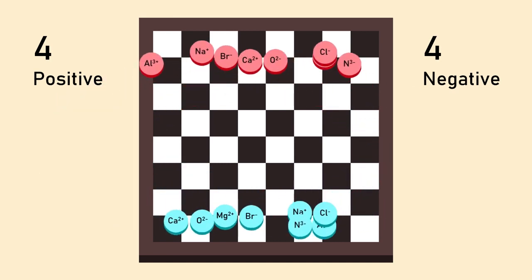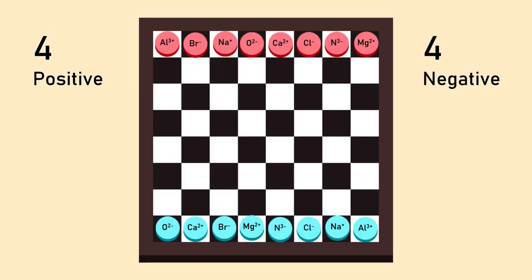To start the game, both players have to place their eight ions on each side of the board in random order. Each player moves one ion on their turn.